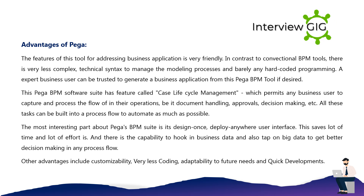Advantages of Pega: The features of this tool for addressing business applications are very friendly. In contrast to conventional BPM tools, there is very less complex technical syntax to manage the modeling processes and barely any hard-coded programming. An expert business user can be trusted to generate a business application from this Pega BPM tool if desired. The Pega BPM software suite has a feature called Case Life Cycle Management, which permits any business user to capture and process the flow of their operations, be it document handling, approvals, decision making, etc. All these tasks can be built into a process flow to automate as much as possible.